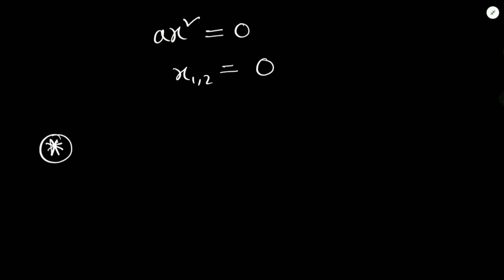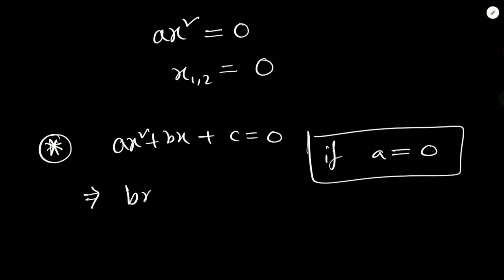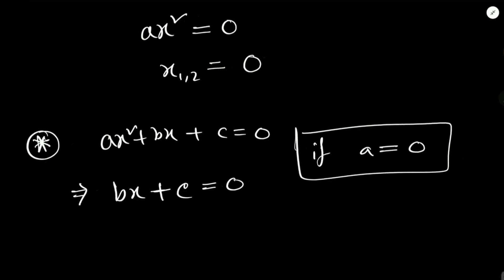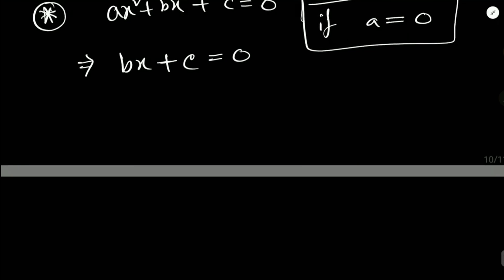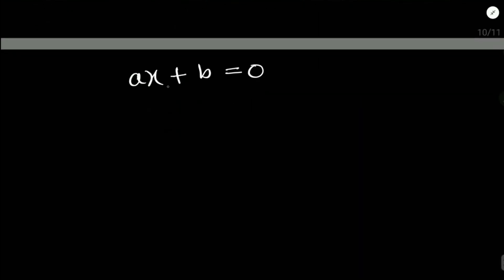Writing the quadratic equation as ax² + bx + c = 0: if a = 0, it becomes a first-degree equation written as ax + b = 0. The maximum power of the variable is 1, so this is a first-grade equation with only one solution: x = -b/a.